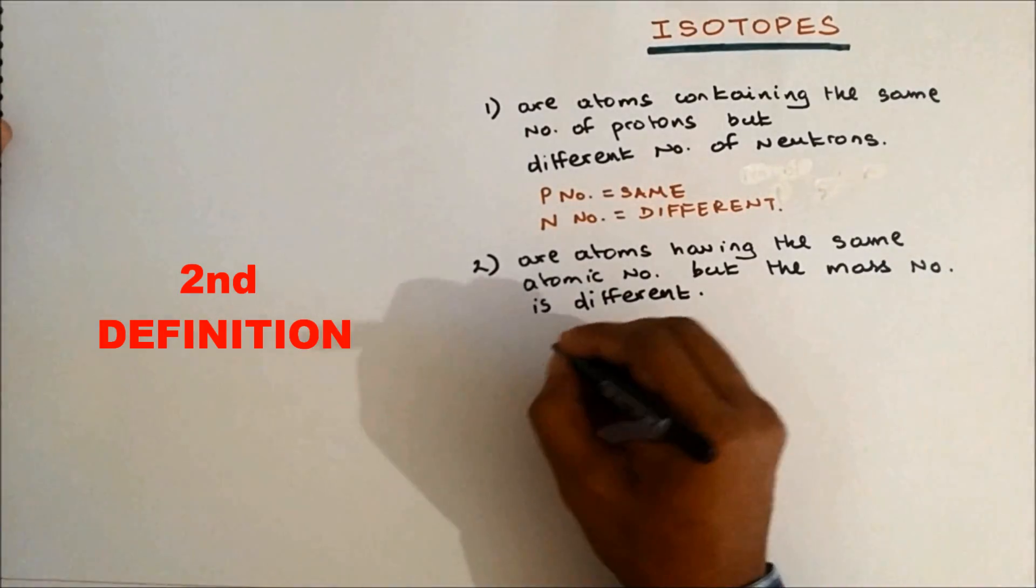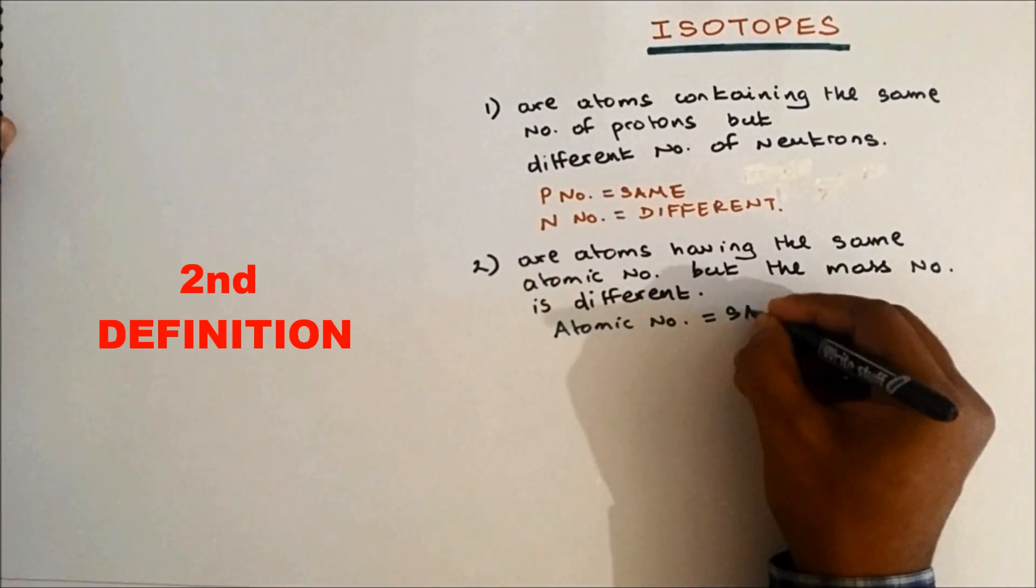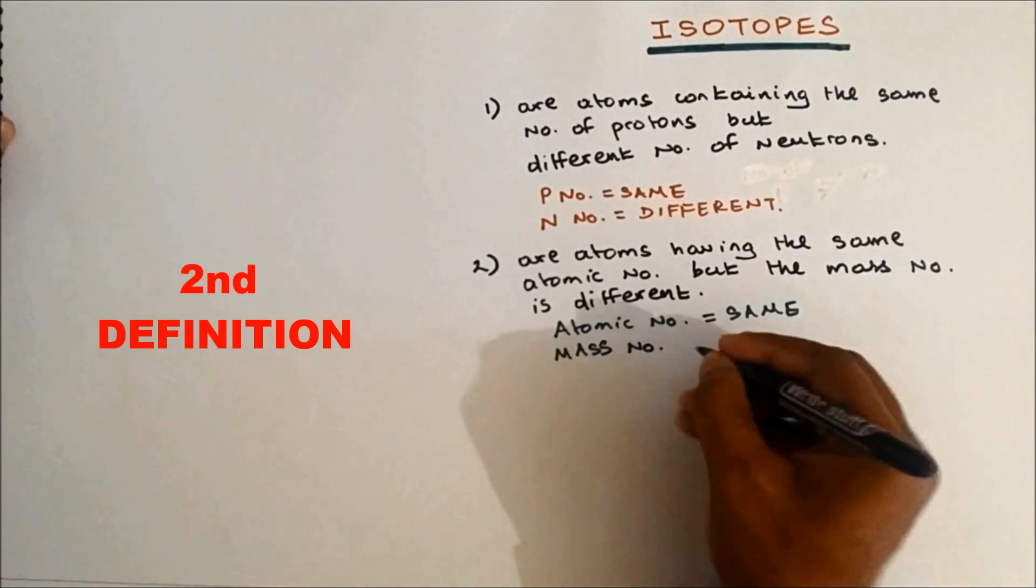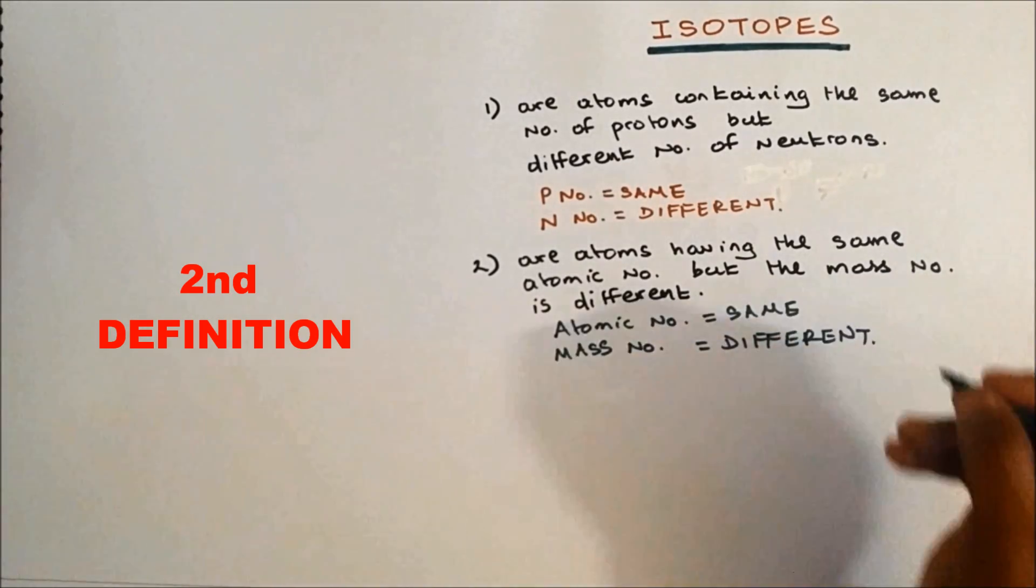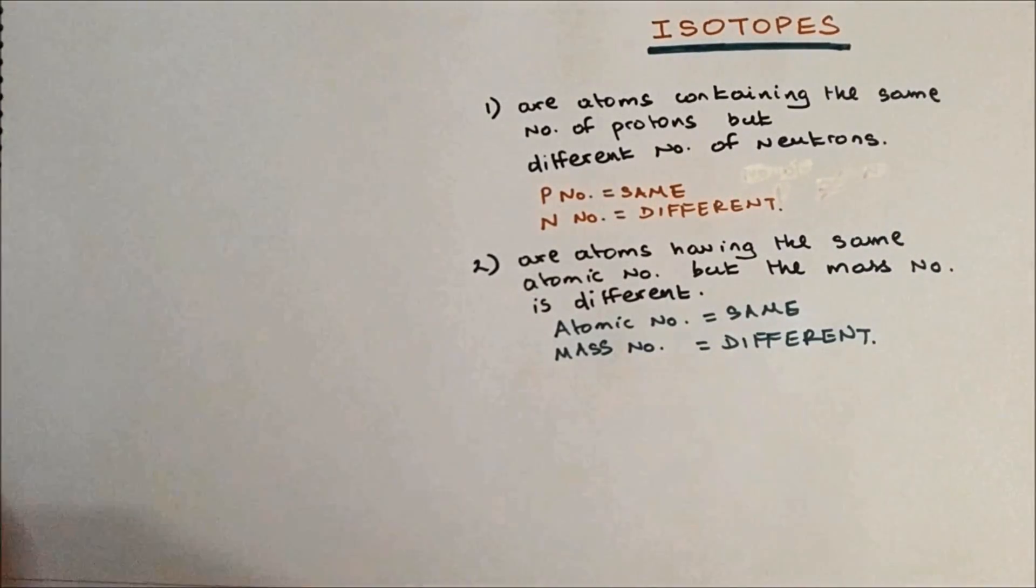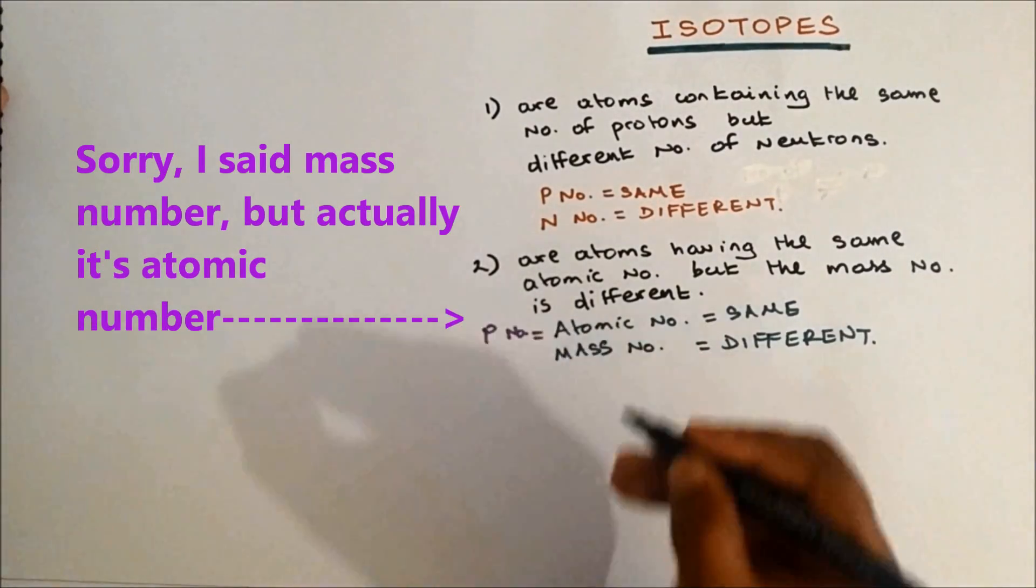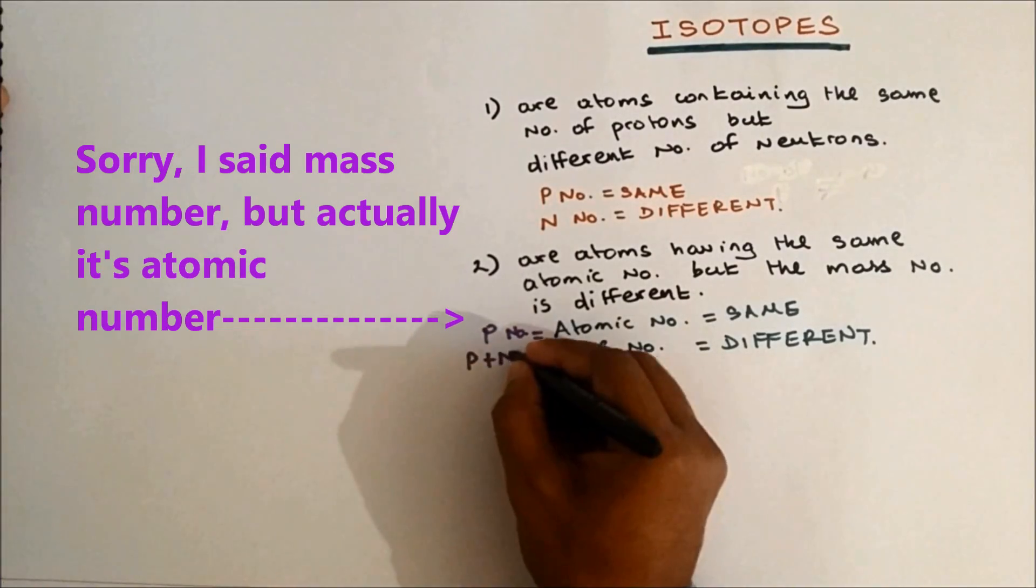So in this definition, atomic number is the same and mass number is different. Mass number is the number of protons plus neutrons.